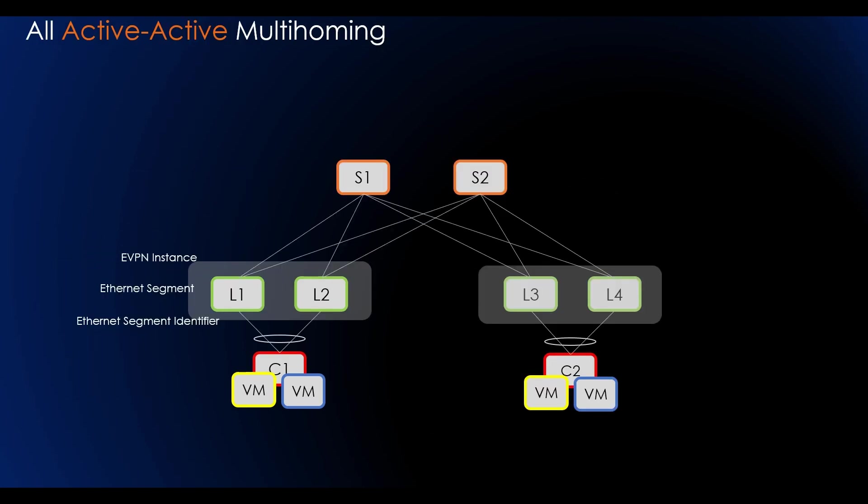Let's see how this is achieved. For multi-homing sites using LAG, we need to understand the concept before we move further: the concept of Ethernet Segment, the concept of ESI Ethernet Segment Identifier, and EVPN instance which is EVI.